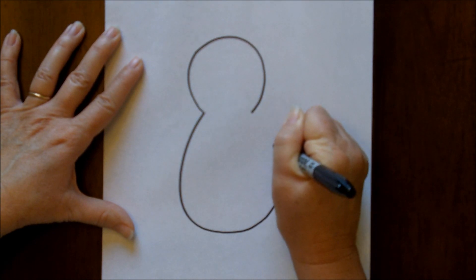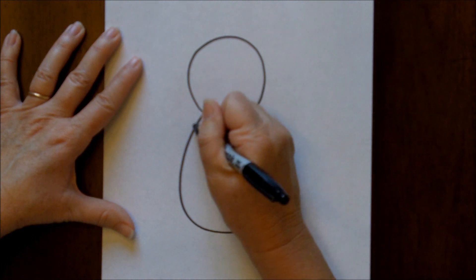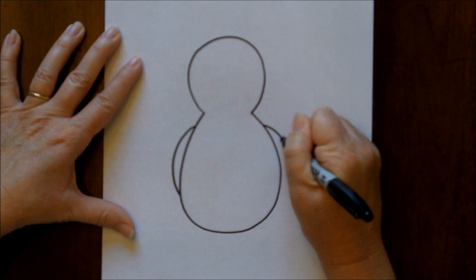That's another C that goes the other way. Now we are going to make some wings on him and those are just curved lines coming out of his body.